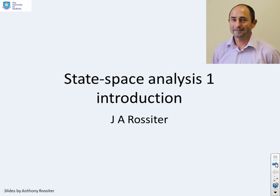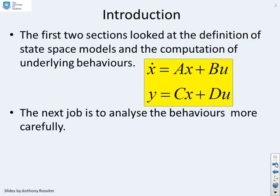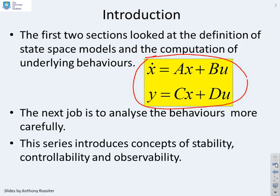This video gives an introduction to the analysis of state-space systems. The first two sections looked at the definitions of state-space models and the computation of underlying behaviours. A state-space model is given by x dot equals Ax plus Bu, where x is a vector of states, u is a vector of inputs, and then y equals Cx plus Du, where y is a vector of outputs. What we want to do now is analyse the behaviours of systems like this more carefully. We're going to look first at stability, and then in the later videos we're going to introduce concepts of controllability and observability.